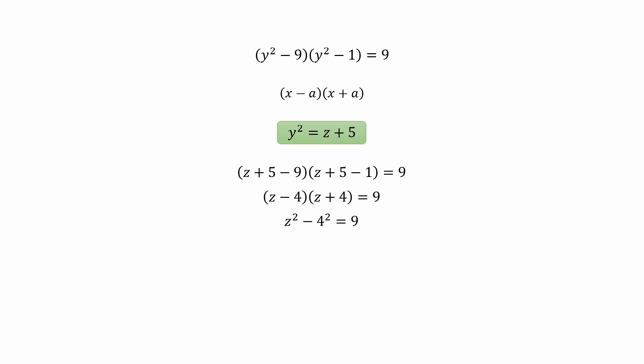From this step, we can find the value of z, which has two possible solutions: z = +5 and z = -5.